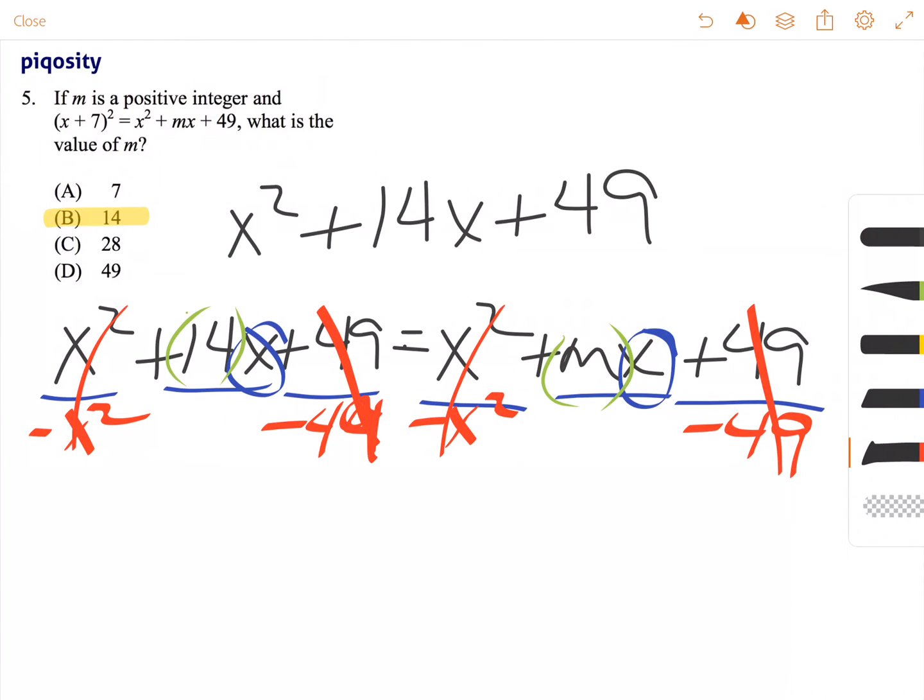Those cancel out. And then we're left with 14x is equal to mx. Then we can divide by x on both sides. And we're left with 14 is equal to m.